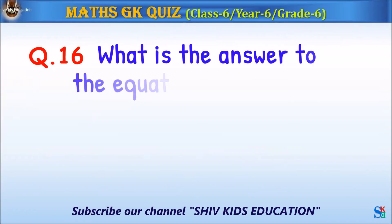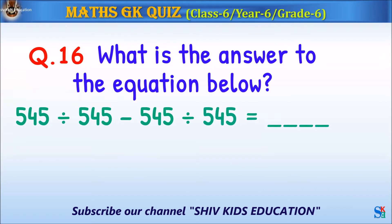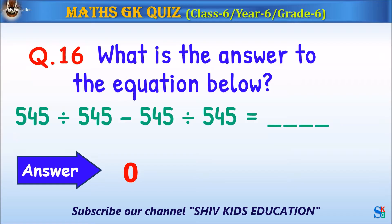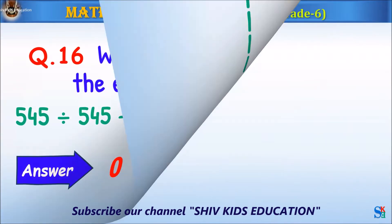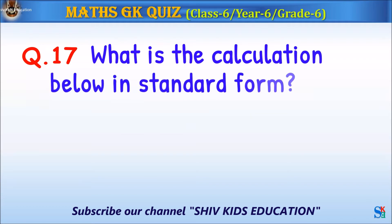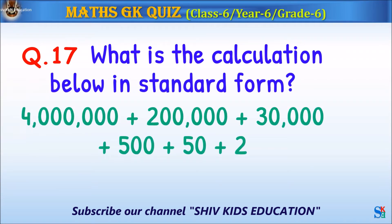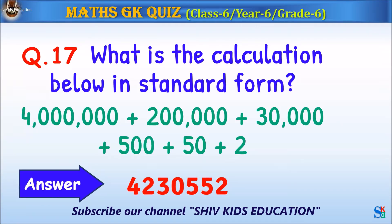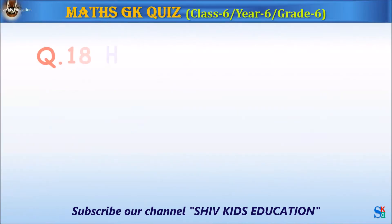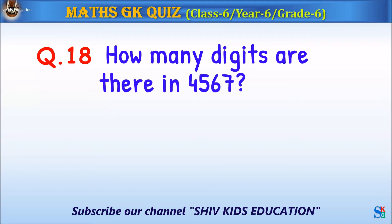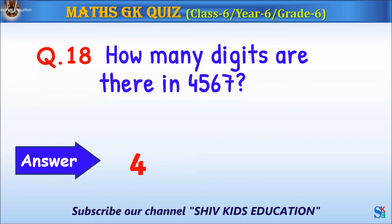Question 16: What is the answer to the equation shown? The answer is zero. Question 17: What is the calculation shown in standard form? The answer is 4,230,552. Question 18: How many digits are there in 4,567? The answer is 4.